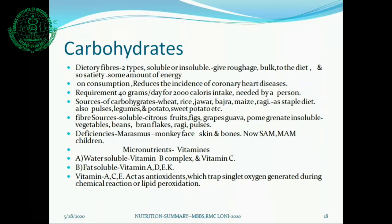Sources of carbohydrates include wheat, rice, jowar, bajra, maize, and ragi — the staple diets — and also pulses, legumes, potato, and sweet potato. Sources of soluble fibers are citrus fruits like oranges, figs, grapes, guava, and pomegranate. Insoluble fibers come from vegetables, beans, ragi, and pulses. Deficiency of carbohydrates leads to marasmus — 'monkey face,' skin and bones with no muscle development. Both kwashiorkor (protein deficiency) and marasmus (carbohydrate deficiency) are now classified as SAM and MAM children.